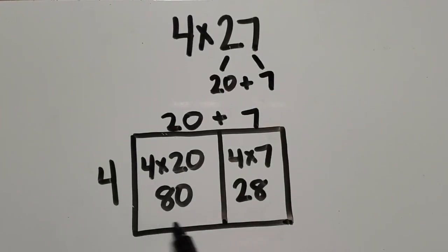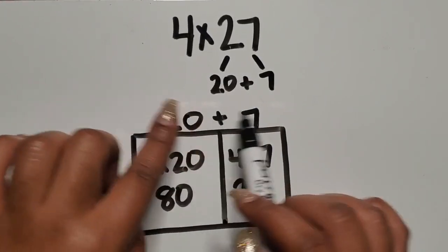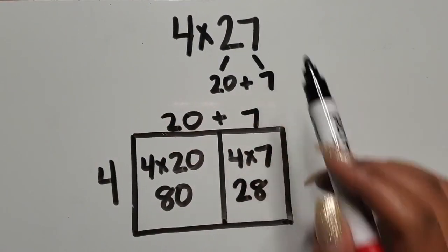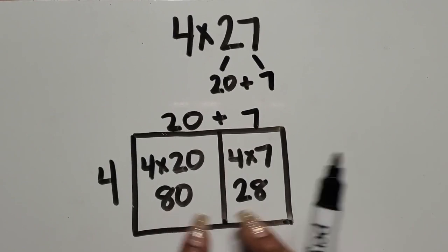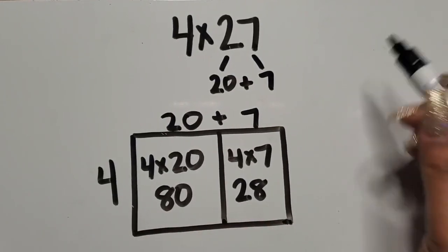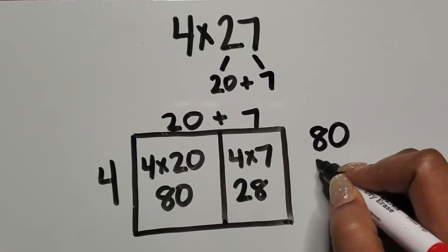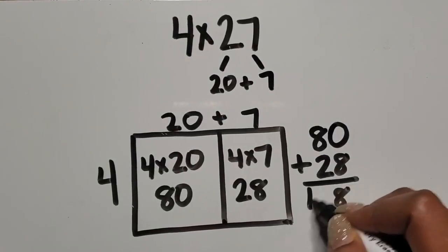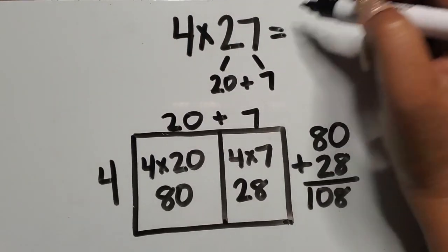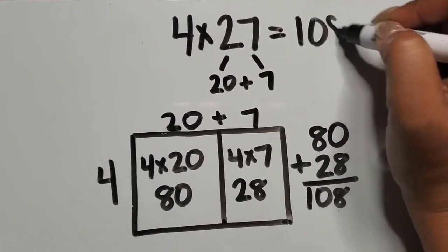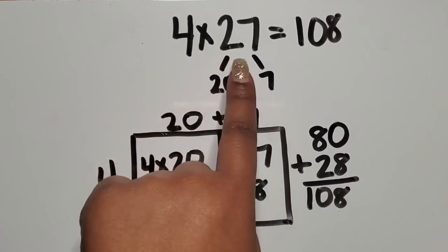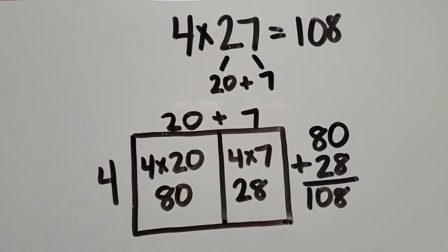So now I have part of my product here and part of my product here. So just like I needed to join these tens and ones back together to make 27, I need to join those products together to make my total number. So I'm going to take 80 and 28, add them together. So my total product is 108. We multiplied a one-digit number by a two-digit number using the area model.